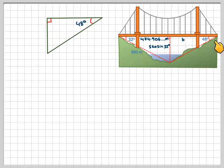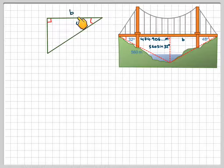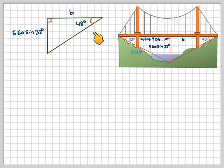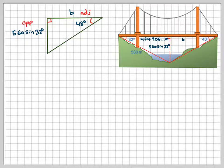So drawing out this triangle now, this is B, this is 560 sine 32, and this angle here is 48. So labelling the sides, adjacent, opposite, we don't need the hypotenuse here. So we've got opposite, adjacent, and angle, so that means I need to use tan theta.